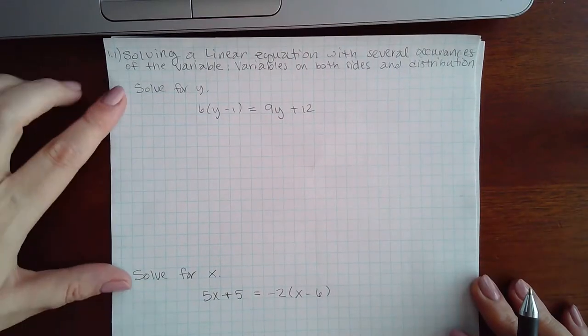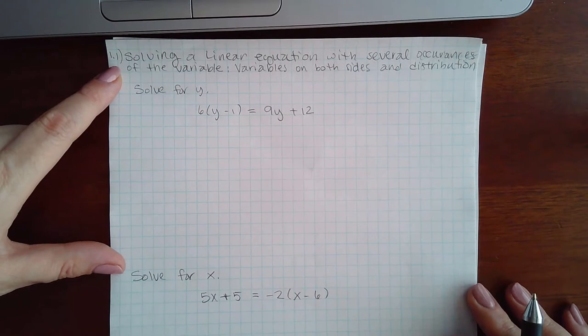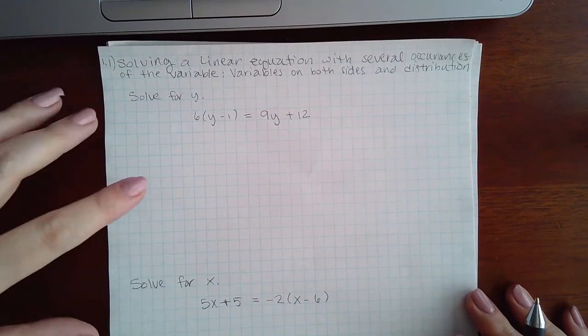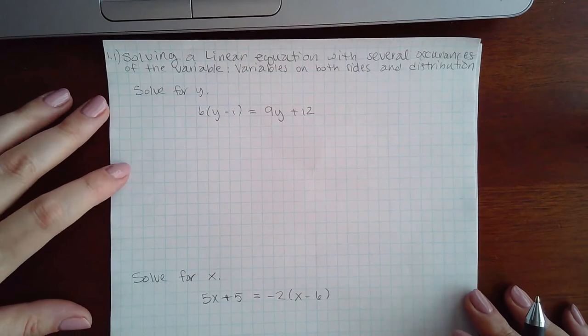Okay, this is 1.1, solving a linear equation with several occurrences of the variables on both sides and distribution.